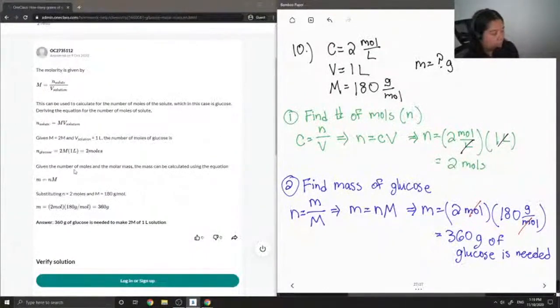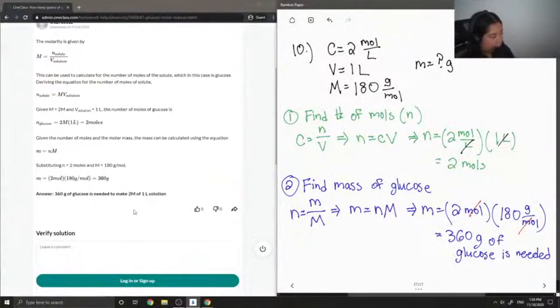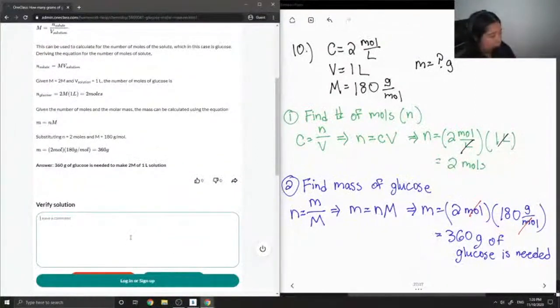Given the number of moles and the molar mass, the mass can be calculated using the equation M equals N times capital M. Substituting in N equals 2 and molar mass is equal to 180 gives us 360 grams of glucose needed to make 2 mole per liter of one liter solution. So this solution is correct.